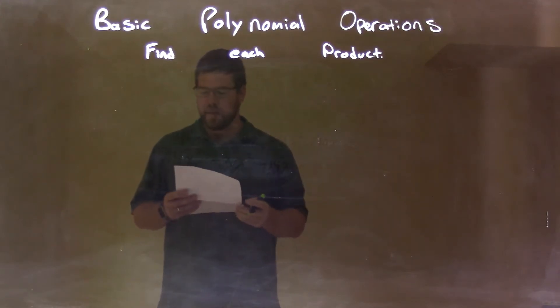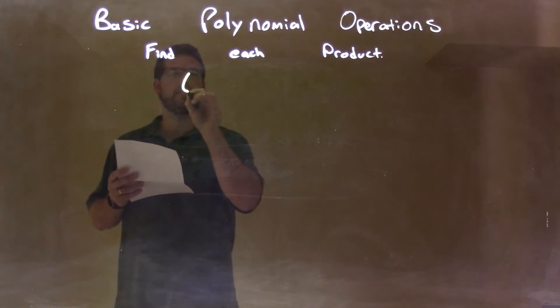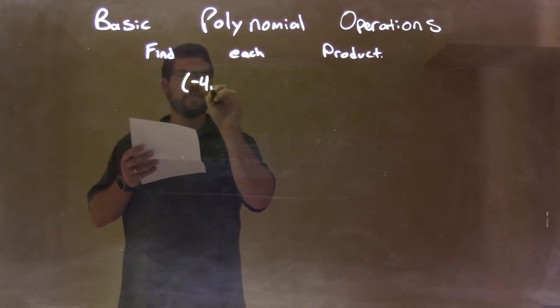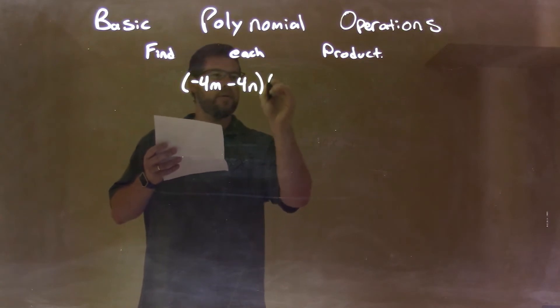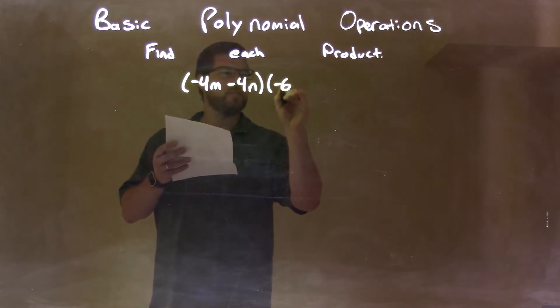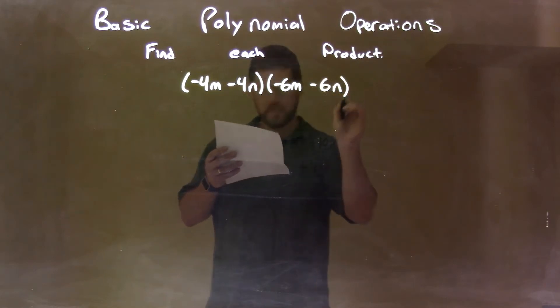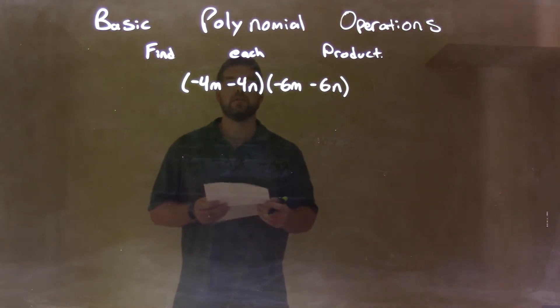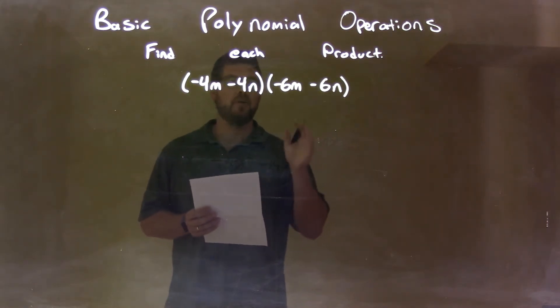We're going to find each product. If I was given this product: negative 4m minus 4n times negative 6m minus 6n. What I want to do is multiply all parts of my first parenthesis by all parts of my second parenthesis. Now, be careful, there are two variables here: m and n.